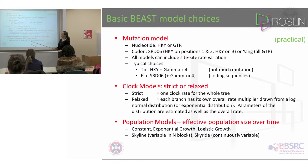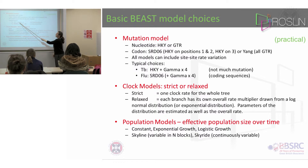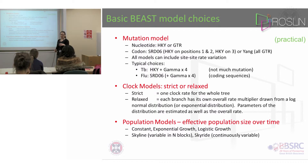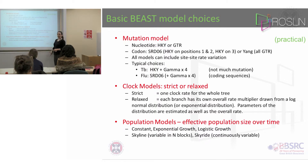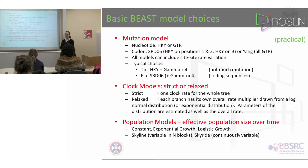Typical choices would be: for TB, you would use the HKY model with site-to-site variation in four categories, described by a gamma distribution — a gamma four model. For flu, because it has very strongly coding sequences, you would use the SRD-06 model and also allow site-to-site rate variation with four categories of rate variation.